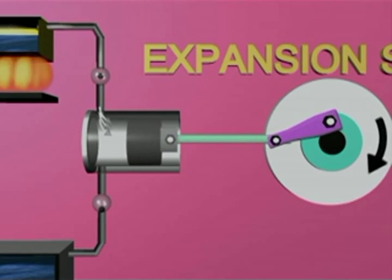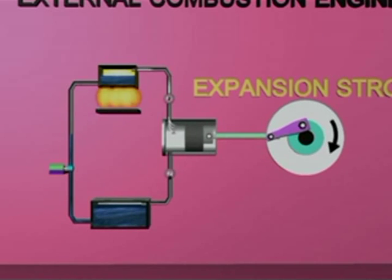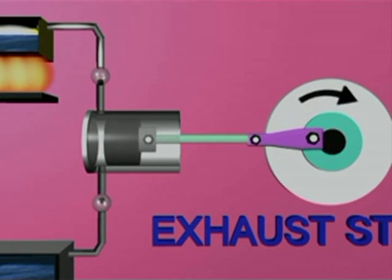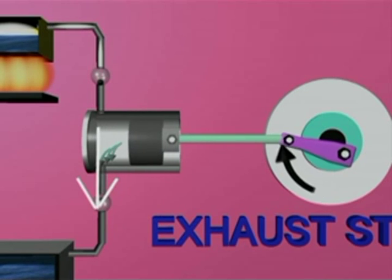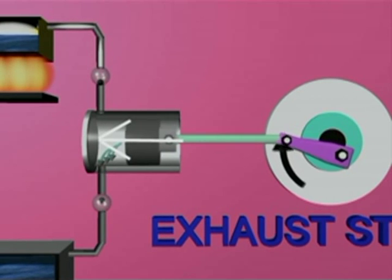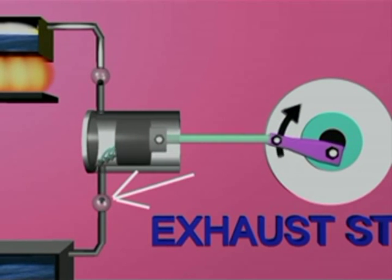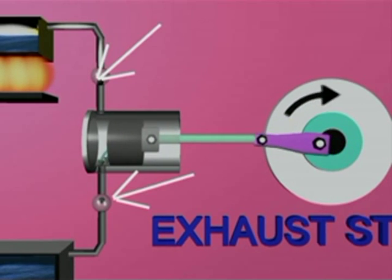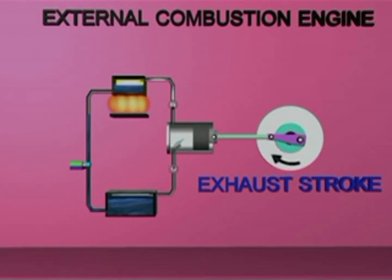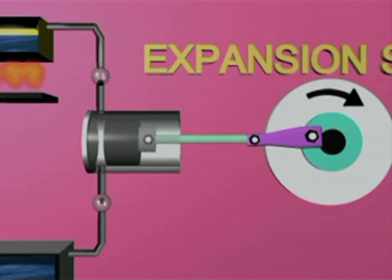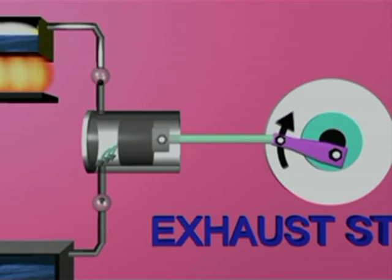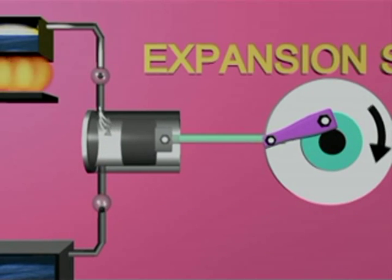As steam expands and pushes the piston, it loses some of its energy and the steam condenses into water. Due to this, the piston is pushed back into the cylinder. The outlet valve opens and the inlet valve closes. This inward movement of the piston is called the exhaust stroke. All the condensed water is collected in the condenser, then the inlet valve opens and the cycle is repeated.